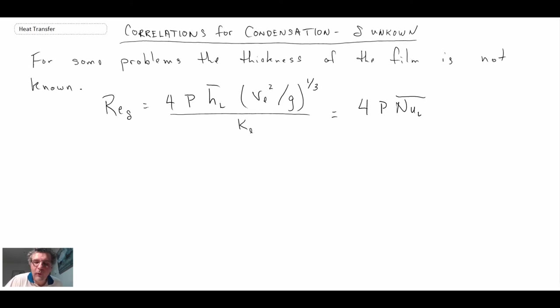What we have here is a different definition for the Reynolds number, and you'll notice there's this capital P that I have in here. I haven't talked about that yet, but that is a dimensionless parameter.